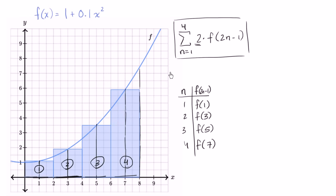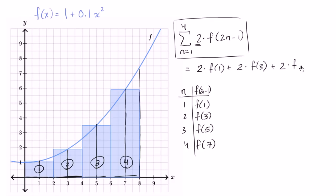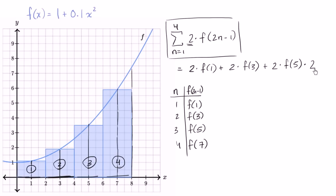Now let's actually try to evaluate this thing. This is going to evaluate to two times f of one, when n equals one, plus two times f of three when n is two, plus two times f of five when n is three, plus two times f of seven when n is four — since four times two minus one is seven.